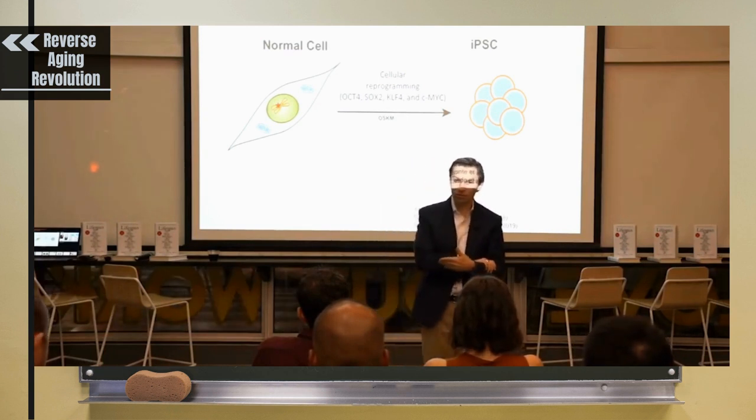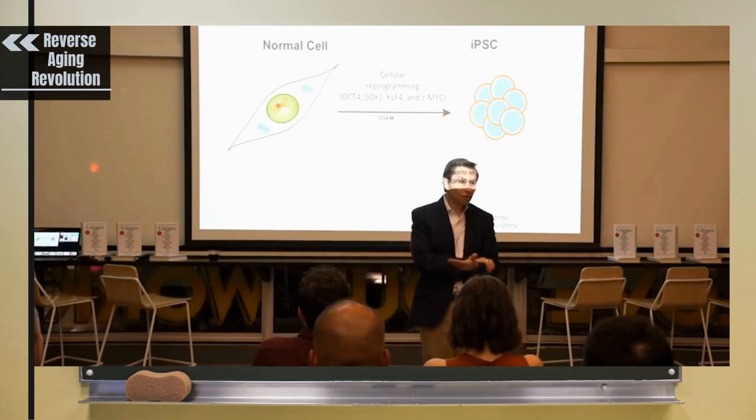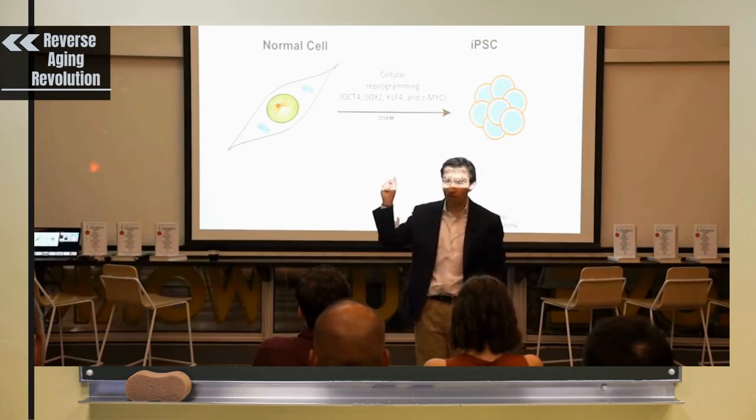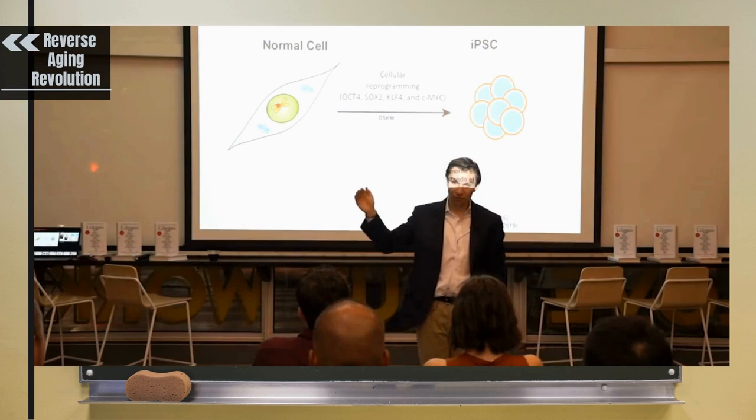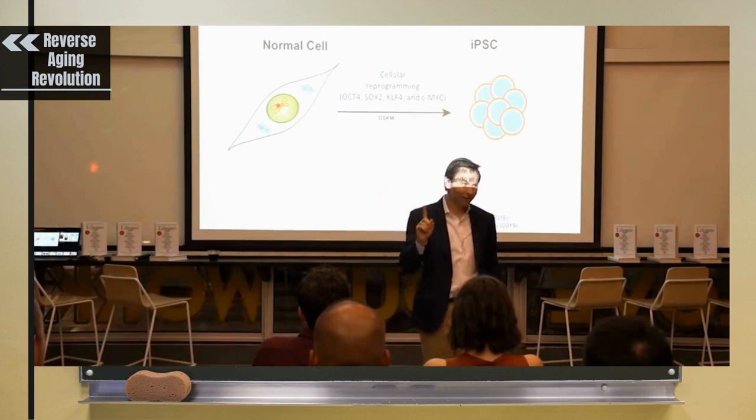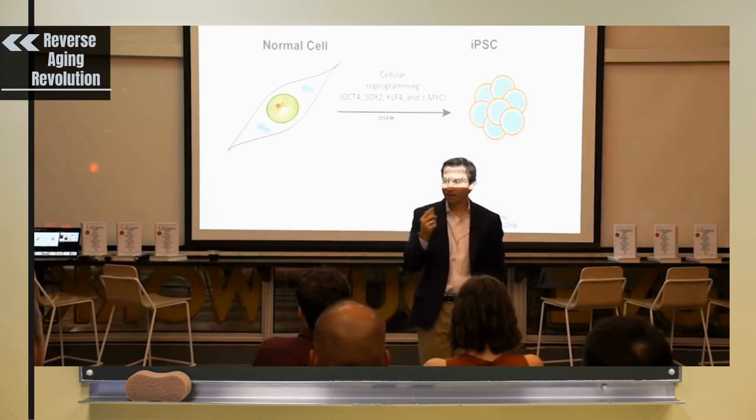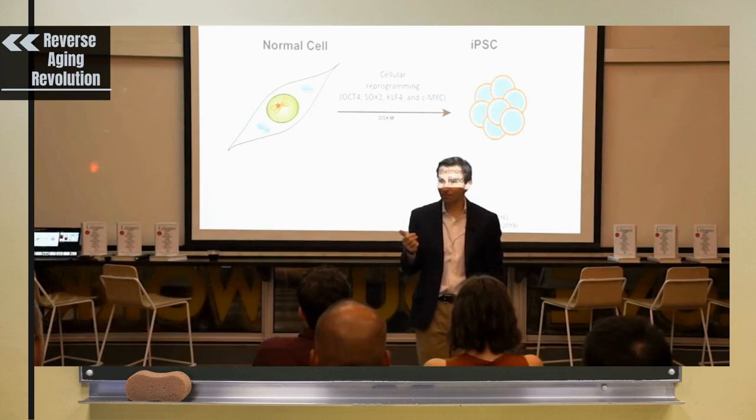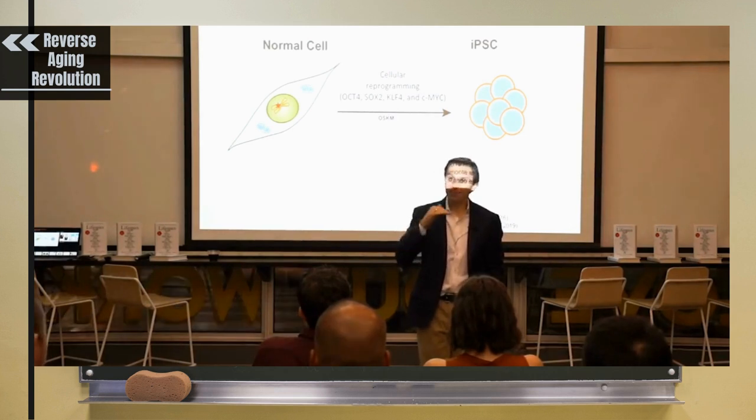So we didn't know if it would work. We had some clue, because there's a scientist at the Salk Institute that a couple of years ago showed that if you turn on all four of these genes in a mouse, it lives 40% longer. But that sounds great until I tell you that every three days, if they didn't stop the treatment, the mice would die.